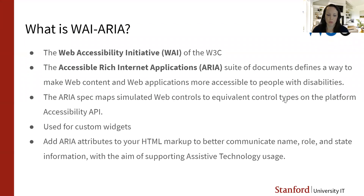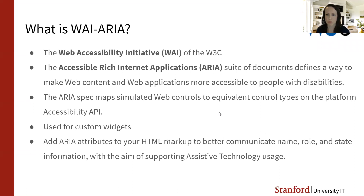I want to give an overview of what ARIA is and why you would use it. The first part of this acronym, WAI, stands for the Web Accessibility Initiative, which is part of the W3C — that international community that works together to develop web standards, including HTML, CSS, SVG, MathML, and ARIA. The ARIA spec comprises a suite of documents that define a way to make web content and web applications more accessible to people with disabilities.